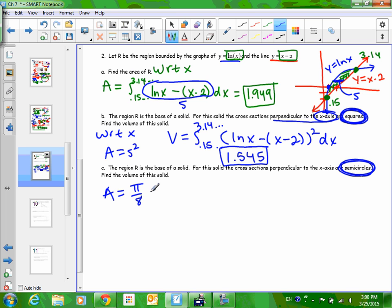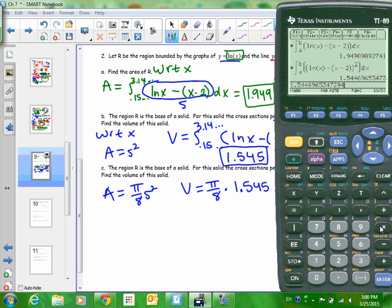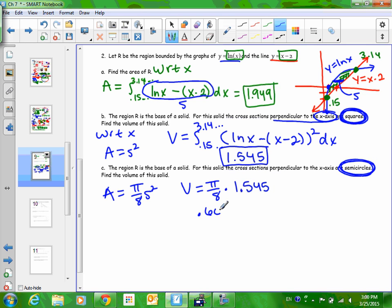Pi over 8. Pi over 8, S squared. So all I've got to do is multiply by pi over 8. I don't have to reintegrate. Pi over 8 is just a number. So whether the number is inside, outside, that doesn't matter. So what I'm going to do is just go pi over 8 times 1.545. Again, I'm not going to use the rounded number though. Okay? I'm going to go up here, and I'm going to grab that, and I'm going to say times pi over 8. Then round my answer, 0.607. Bless you.